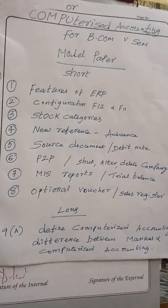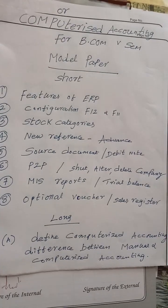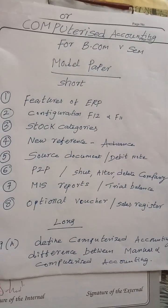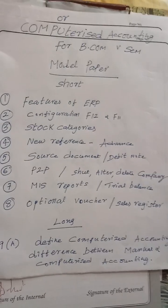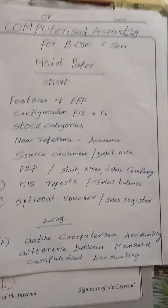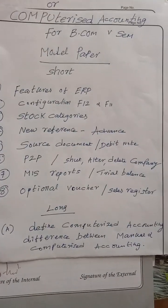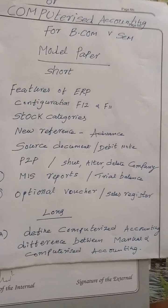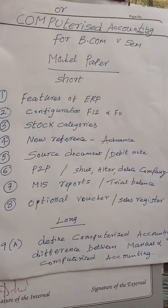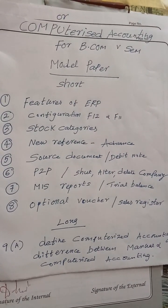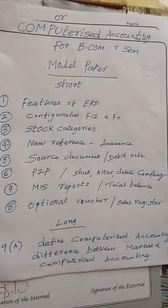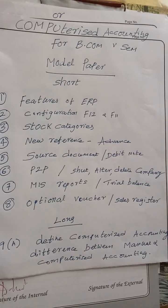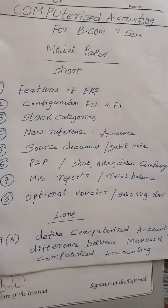Godown is a place where goods are kept; it is also known as a location. There will be a main location and different parts of godowns. Inventory masters means when you press inventory info from the main menu, the screen that you are going to get is said to be inventory masters.